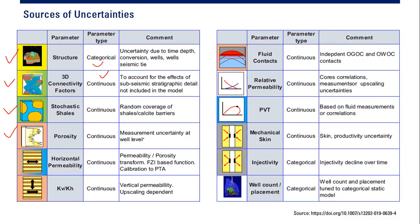There is porosity uncertainty: measurement uncertainty at well level, uncertainty from the log, uncertainty from the core. Uncertainty regarding horizontal permeability — the permeability-porosity transform, FZI-based function calibration to pressure transient analysis — and also the anisotropy of vertical permeability per horizontal permeability. There will be uncertainty regarding fluid contact, oil-gas contact, oil-water contact, relative permeability, coarse correlation, measurement or upscaling uncertainty affecting relative permeability, and PVT uncertainty based on fluid measurement or correlation.